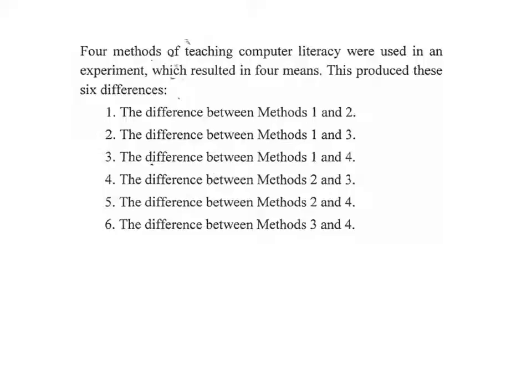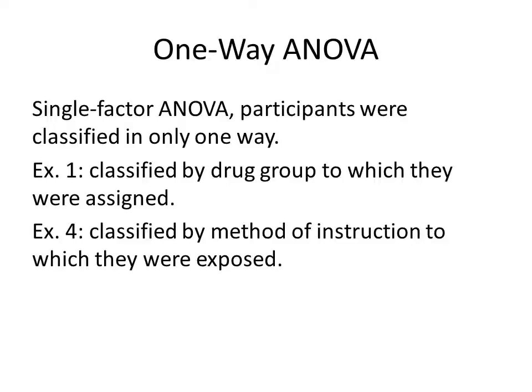The examples we have been discussing are known as one-way ANOVAs, or single-factor ANOVAs. This means participants are classified in only one way. For example, in example one, they were classified by the drug group to which they were assigned, and in example four, they were classified by the method of instruction to which they were exposed.